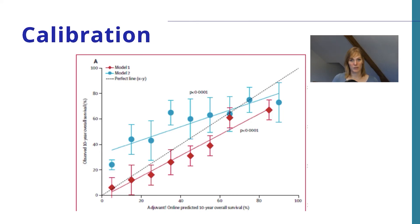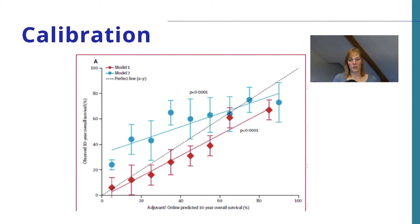Discrimination gives you some idea about the general performance of the whole model in the group, but it does not give you a more detailed idea of where the possible mistakes are. For that reason, calibration is also important. In a calibration graph, the x-axis shows the 10-year predicted overall survival predicted by the model — from 0 to 100% — and the y-axis shows the observed overall survival. The ideal perfect prediction model would go straight through the middle, represented by the dotted line.